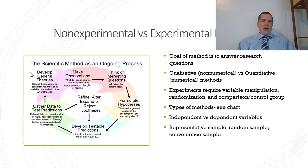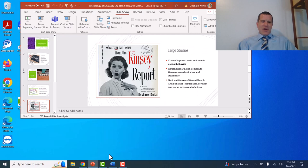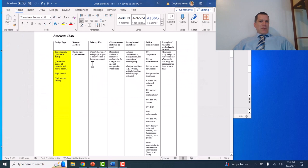Not to bore you with all the research methods, because you guys are going to get a lot of it. But so when we're talking about experimental different types of methods, we're going to be looking at does it have randomization, manipulation, and a comparison or a control group?